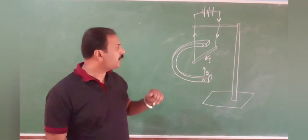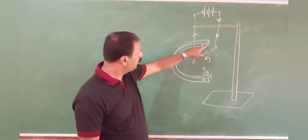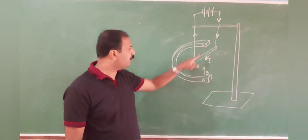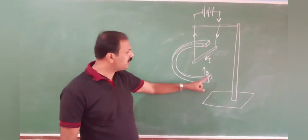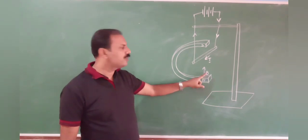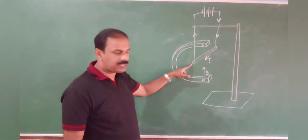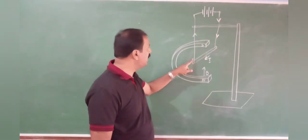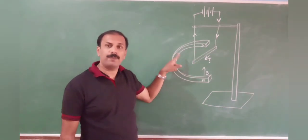Now, consider a conductor which is kept inside a magnetic field. Here, we have a horseshoe magnet, which is U-shaped. For this magnet, you can see the south pole is here and north pole is down. If south pole is here and north pole is down, the direction of magnetic field will be upward. This B marked here is the magnetic field. We have a conductor kept here, connected to a battery. You can see the positive of the battery here, so the current is passing like this.